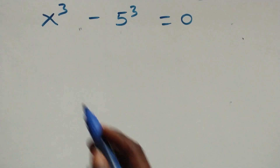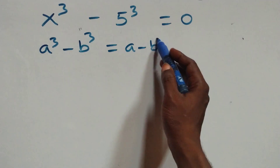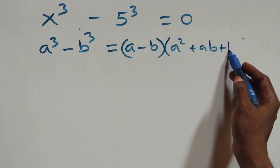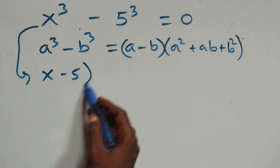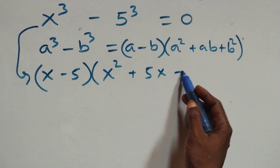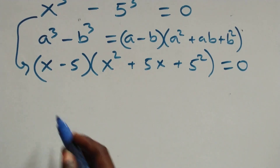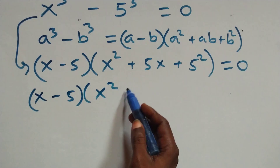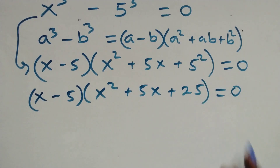Moving to the second case using the difference of cubes identity — a cubed minus b cubed equals a minus b times bracket a squared plus ab plus b squared — what we have becomes x minus 5 times bracket x squared plus 5x plus 5 squared, that's 25, close bracket equals zero.